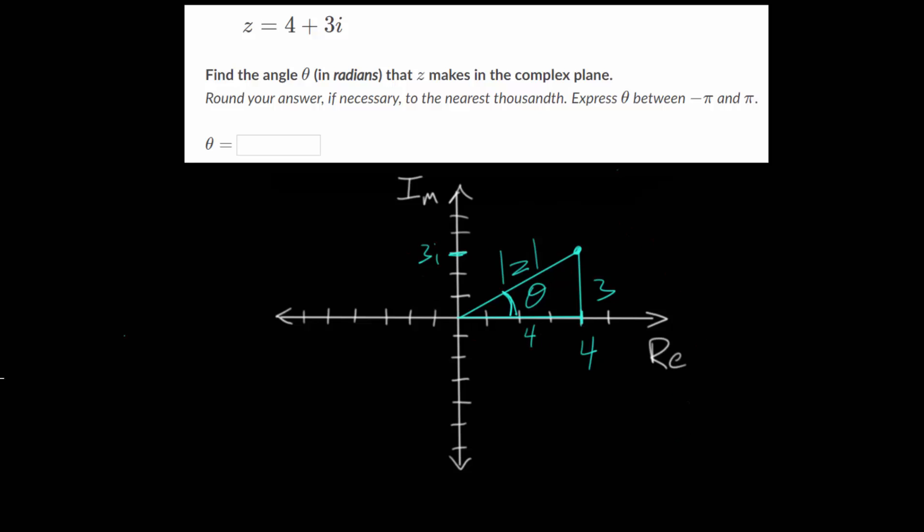So when using trigonometry, we can use our SOH CAH TOA to determine which trig function we want to use. And relative to this angle theta, we have the side length that is opposite it. So this is the opposite side length. And we have the side length next to theta, which we call the adjacent side.